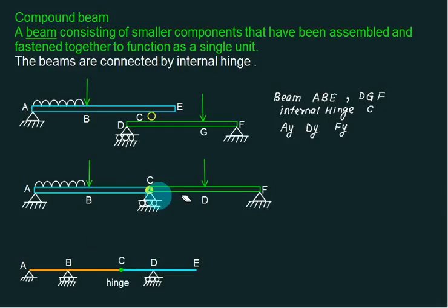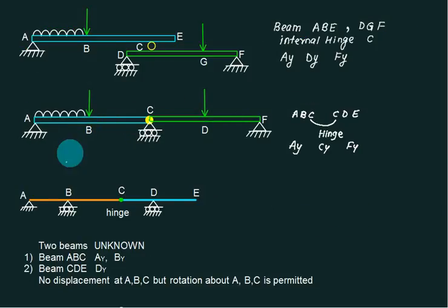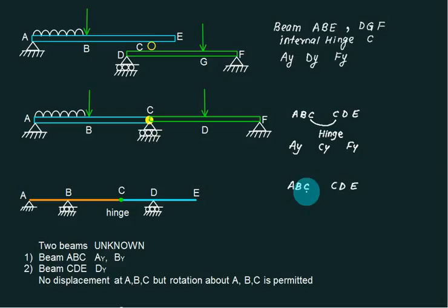This beam has no common part — this one is the first beam and this one is the second beam. The common letter C means C is the hinge. A hinge is shown by a dark circle. Normally we avoid this type of figure; rather than this we use a line diagram. So this line diagram and this figure are the same. This time we also have one beam that is ABC and a second beam CD, and C is common, so this must be the hinge point, marked with a dark circle.